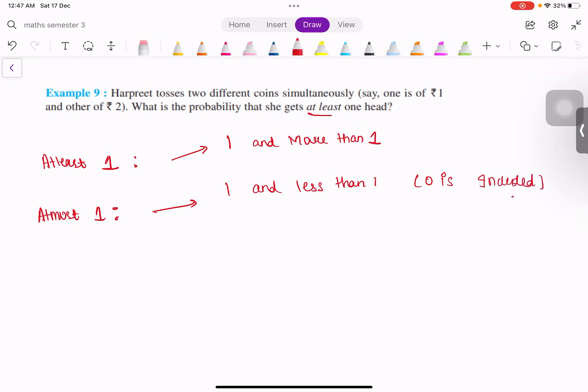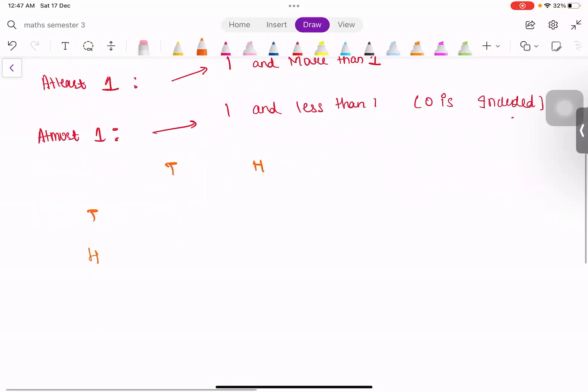Now we solve this question. There are two coins tossed, two coins tossed, total number of outcomes...